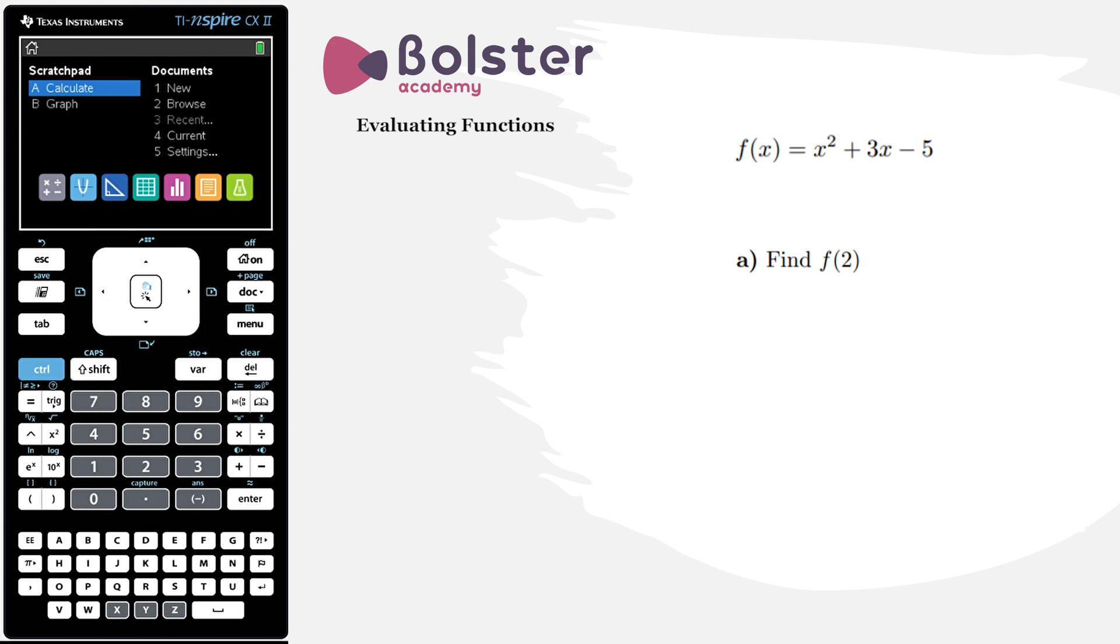In this question we've got f(x) is equal to x² + 3x - 5 and we've been asked to find f(2). So that means evaluate the function at x equals 2, find the y value when x is equal to 2.